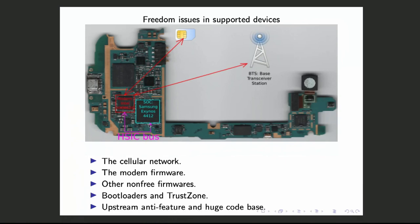There are a lot of freedom issues in smartphones. The cellular network locates you at 10–20 meter accuracy when you're connected, so the network knows where you are at all times. The modem firmware is not free, the bootloader is also not free, and the bootloader loads a second OS alongside Replicant in TrustZone, which has even more privilege than Linux kernel space.